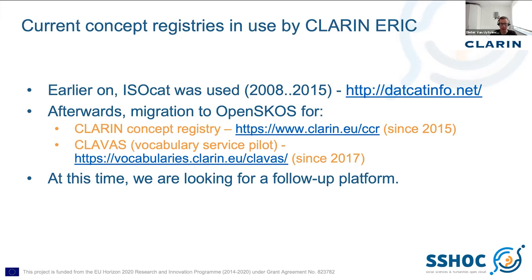That concept was left apart around 2015 when we moved on with OpenSCOS for two different purposes. First of all, there is the CLARIN concept registry, which was kind of a direct follow-up of some of the content categories from ISOCAT — so they were migrated into this concept registry. This registry contained mostly definitions of what specific metadata fields mean, for instance, if you're talking about a title or a description. These metadata fields were linked to a definition in the concept registry, and that's still the case. This fits within the broader metadata framework CMDI, which we are using at CLARIN.